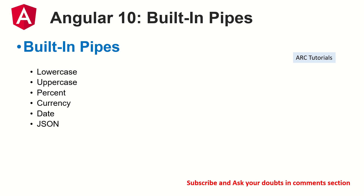Some built-in pipes are self-explanatory by their names: lowercase, uppercase, percent, currency, date, and JSON. Uppercase will convert a string to uppercase, lowercase will convert it to all lowercase, percent converts a number to a percentage, currency gives you a default currency format, date has a default format you can use, and JSON prints a JSON object. These are all the built-in pipes that we can use.